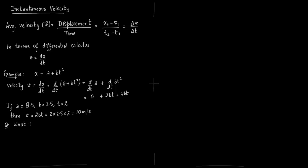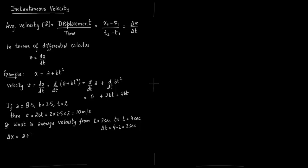Another question: what is the average velocity from 2 seconds to 4 seconds? Notice that we computed instantaneous velocity exactly at 2 seconds. But for average velocity we need the time difference — the exact time taken to travel from one point to another. So from t = 2 to t = 4 seconds, delta t is 2 seconds. Delta x equals (a + bt₁²) minus (a + bt₂²).